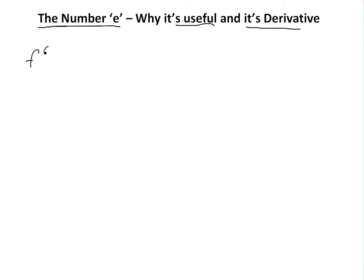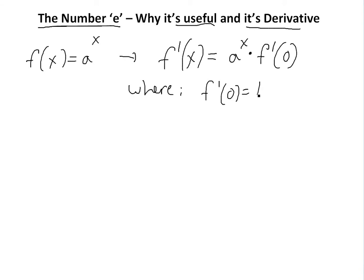From my previous video, I showed that if you have a function like f(x) equals a to the x, where a is just a constant, then this is basically an exponential function. Then if you take the derivative using the definition of derivative, f prime of x equals a to the x times f prime of zero, where f prime of zero equals the limit as h approaches zero of a to the h minus one over h.